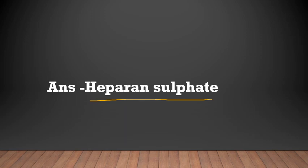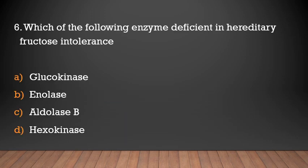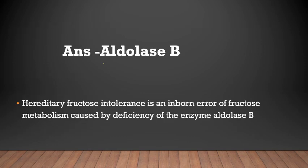Which of the following enzyme is deficient in hereditary fructose intolerance? Glucokinase, enolase, aldolase B, or hexokinase? Answer: Aldolase B. Hereditary fructose intolerance is an inborn error of fructose metabolism caused by deficiency of the enzyme aldolase B.